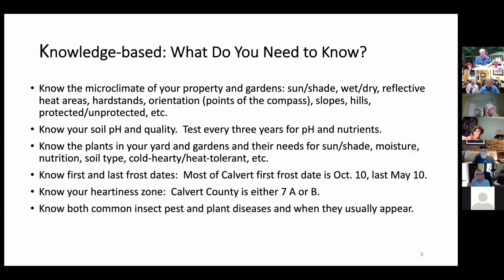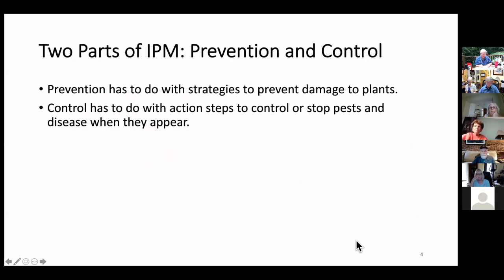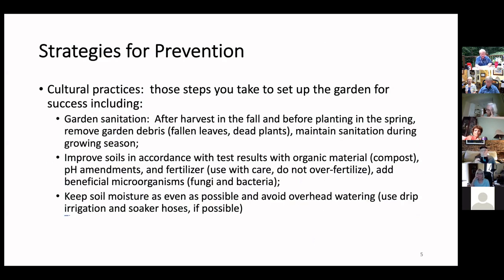There are two parts of integrated pest management I'm going to emphasize today: prevention and control. Prevention has to do with strategies to keep damage to your plants from happening. Control has to do with action steps to control or stop pests and disease when they appear. Strategies are broken down between cultural and physical, biological, and chemical. I'll start with cultural, as most of these steps have to do with prevention — those steps you take to set up the garden for success.